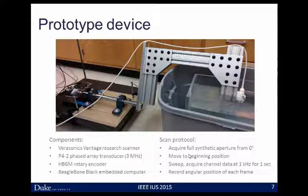The device we'll use in this study is built on the Ferrosonics Research Scanner platform, and we're using the P42 Phased Array Transducer, transmitting three megahertz diverging waves. The array itself is two centimeters wide and will sweep anywhere between 30 and 50 degrees as we do the study.